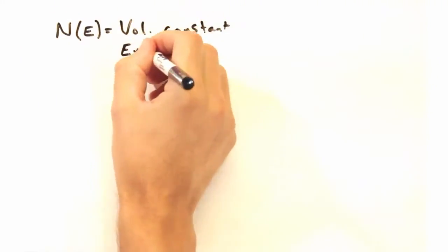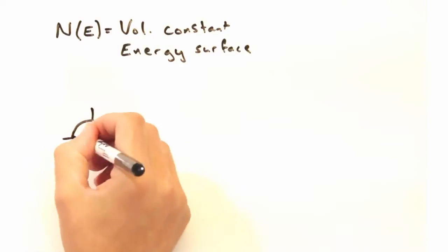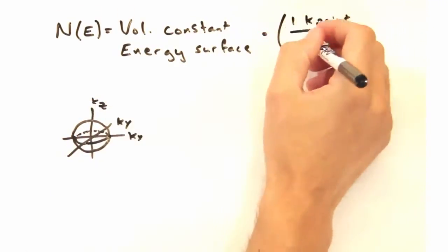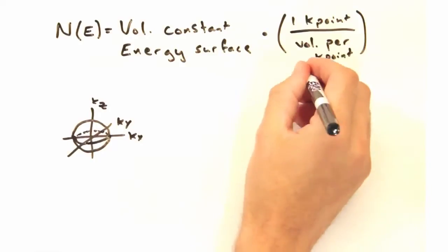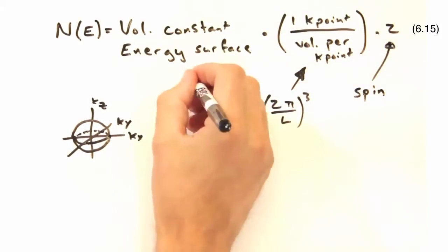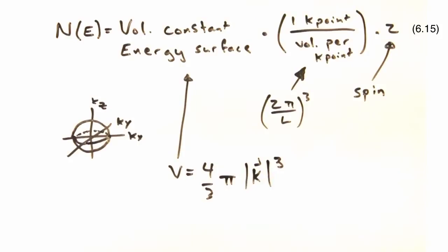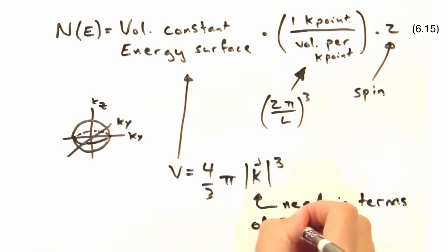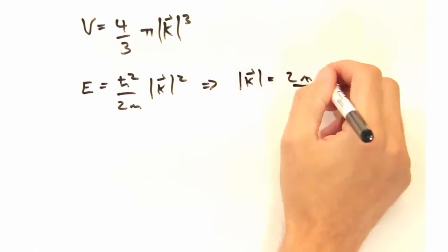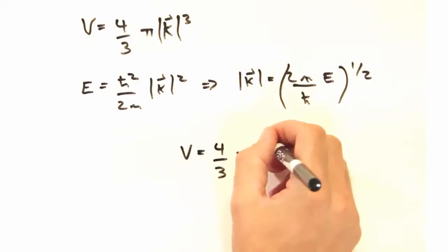We already calculated the number of states for the traveling wave case in the last video by multiplying the volume of the constant energy surface by one k-point per spacing cubed, by a factor of two for the two spin states of each electron. We're almost ready to take the derivative — we just need this in terms of energy, and we can get that by solving for k in terms of E from the dispersion relation.